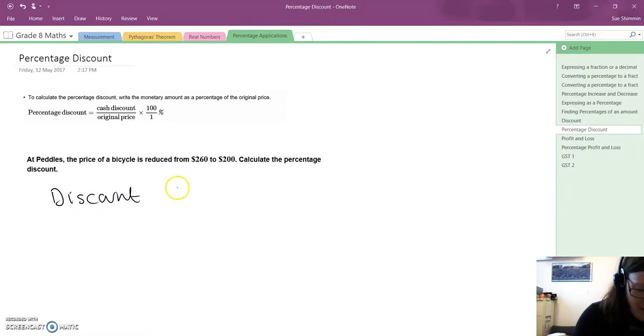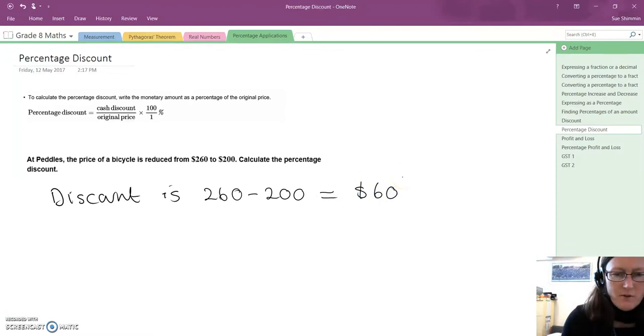The discount is $260 that the bike was meant to be, minus $200 that you actually paid, so you got $60 discount. That's the first step.